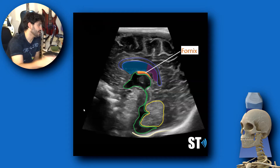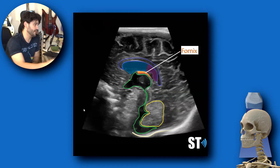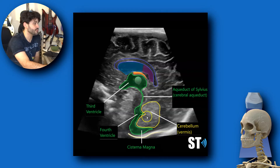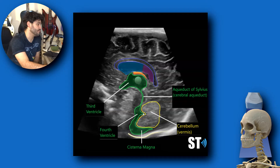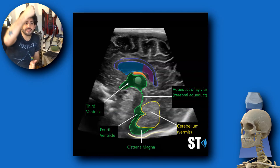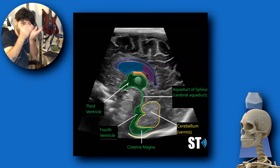Let's go to the infralateral ventricle system — the ventricles below the lateral ventricles. You've got your third ventricle, aqueduct of Sylvius, and fourth ventricle, which is a triangular portion anterior to the cerebellar vermis. The cisterna magna is down here at the cranial bone. The third ventricle is very clear here; you're not going to see it that clearly on older babies — you'll probably just see it as a slit below the lateral ventricles when going coronal.